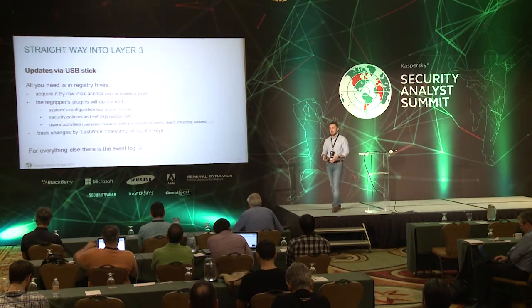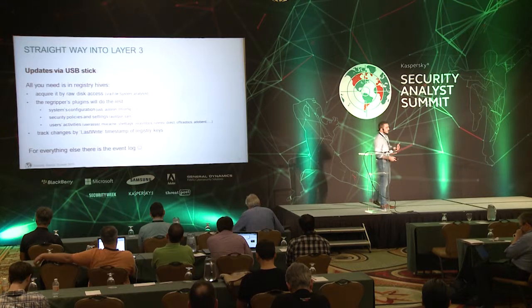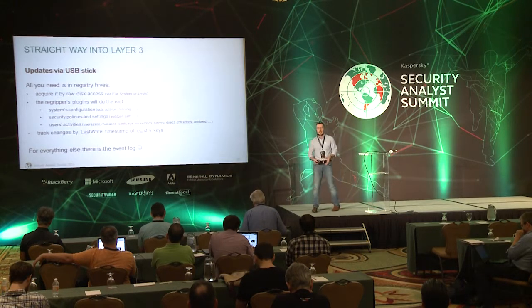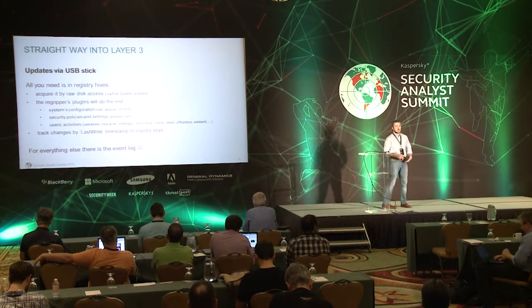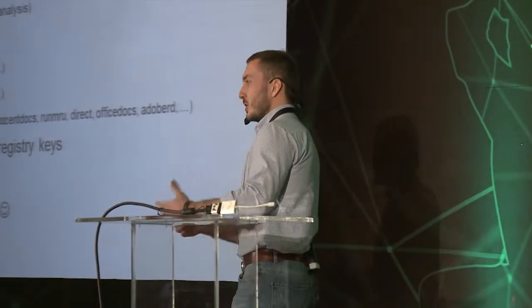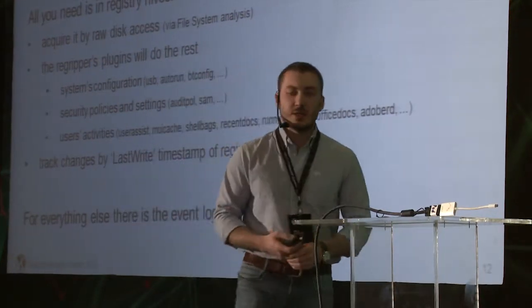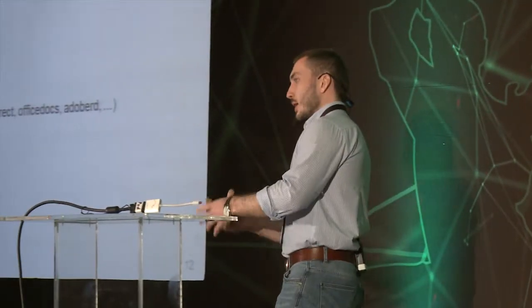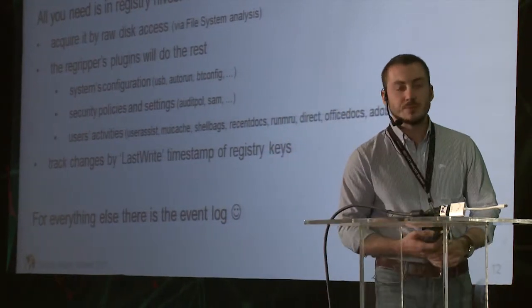Updates for ICS software or general software like Windows are installed on the internal industrial network — on servers, HMIs, and workstations — mostly via USB sticks. Those USB sticks are used in home and other hostile environments, so they can be infected with different kinds of malware, from ransomware blockers to peer-to-peer trojans.